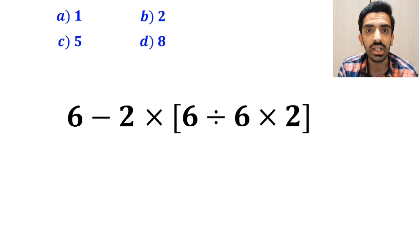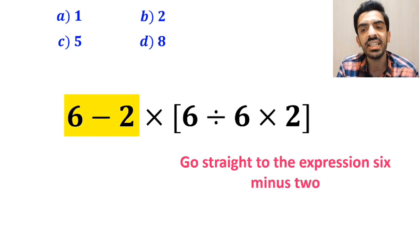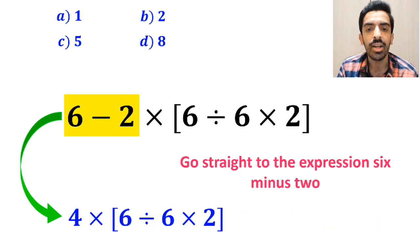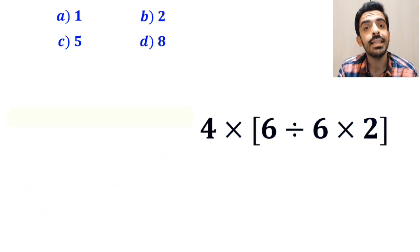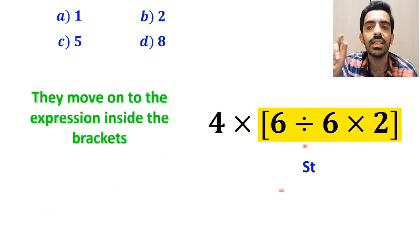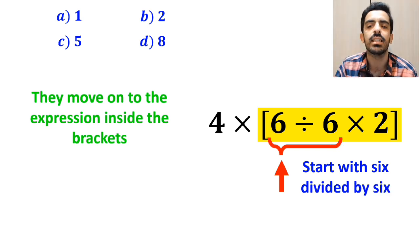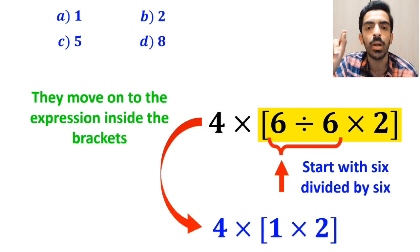Many people at first go straight to the expression 6 minus 2, which I have highlighted in yellow, and instead of this expression, they write 4 multiplied by 6 divided by 6 times 2 inside the brackets. And the next step, they move on to the expression inside the brackets and start with 6 divided by 6. So this expression simplifies to 4 multiplied by 1 times 2 inside the brackets.